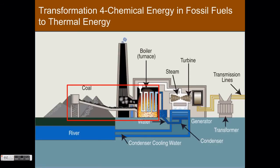So 300 million years later, humans dig up these fossil fuels. We're going to take a look specifically at coal. Most of the rest of the transformations we'll see take place in a coal power plant. Fossil fuels are brought to a coal power plant, the coal is burned in a giant furnace, and this converts the chemical energy in the coal to thermal energy in transformation four.